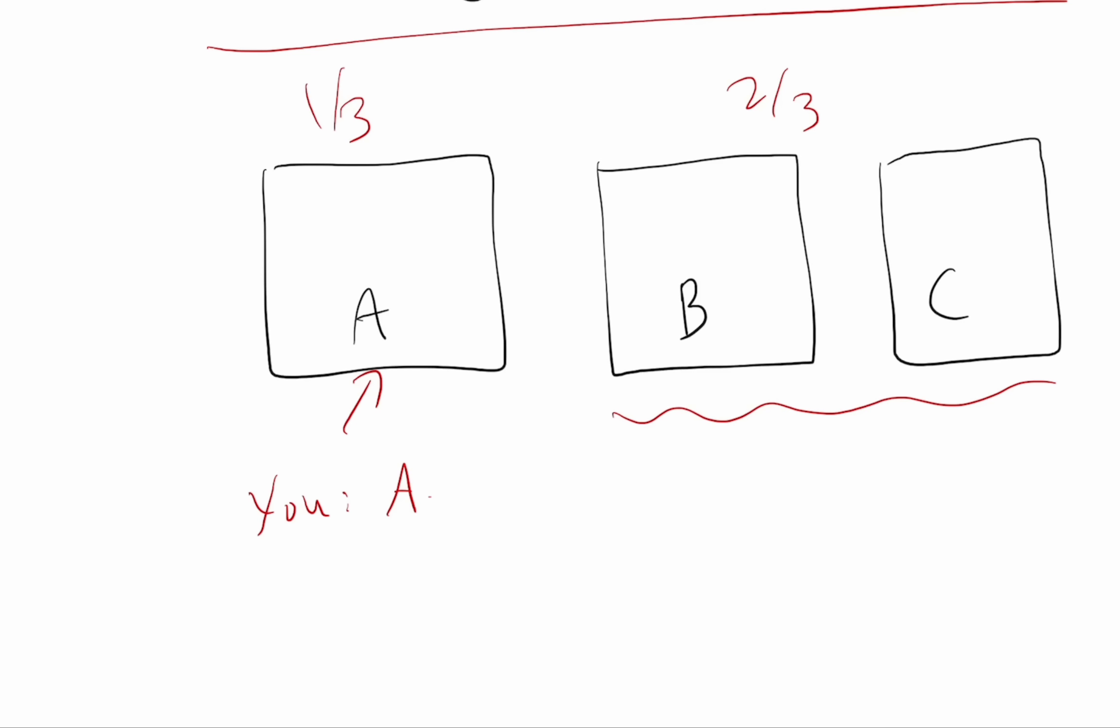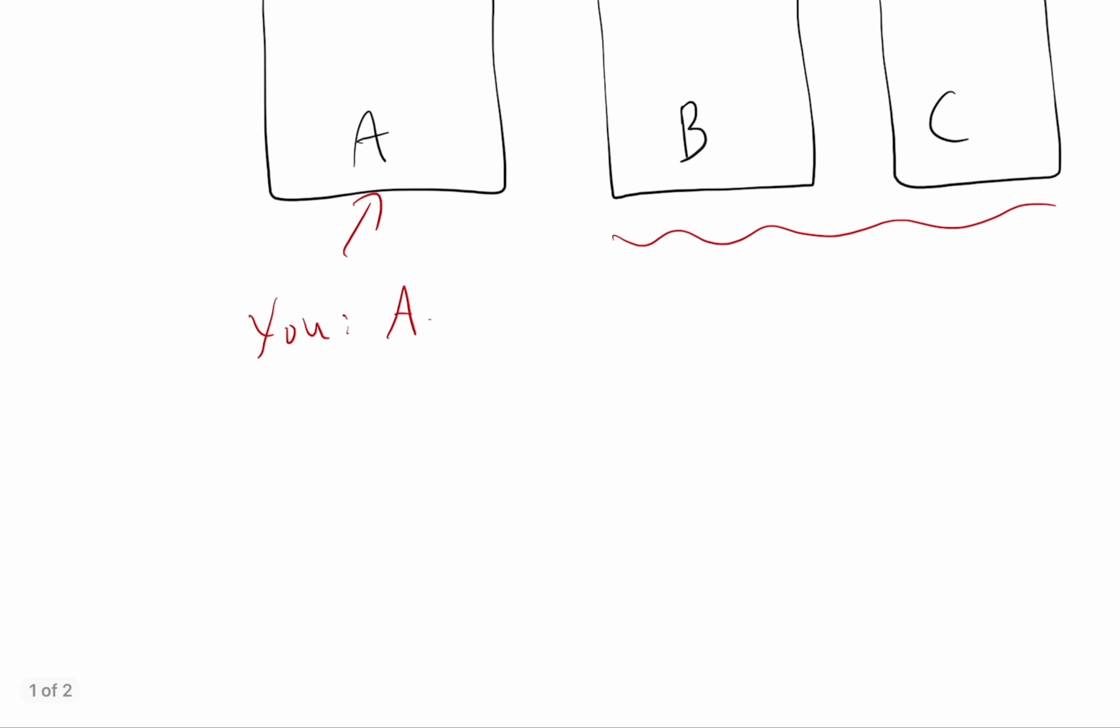Here's the analogy that really helps me understand why this is true, because most people, this is really trippy. I think the reason this is trippy, just psychologically, there's something about these numbers: three, one-third, two-third. Here's a different version of the Monty Hall problem that's actually the exact same problem.